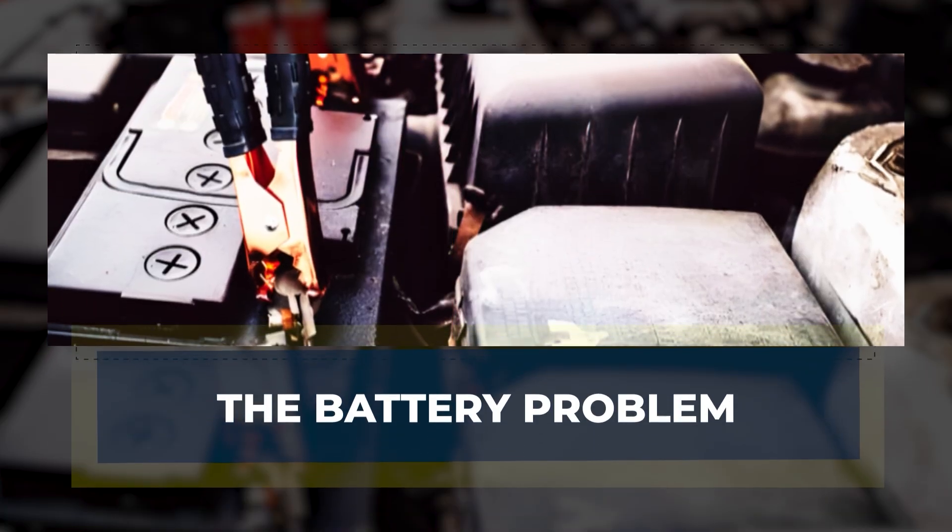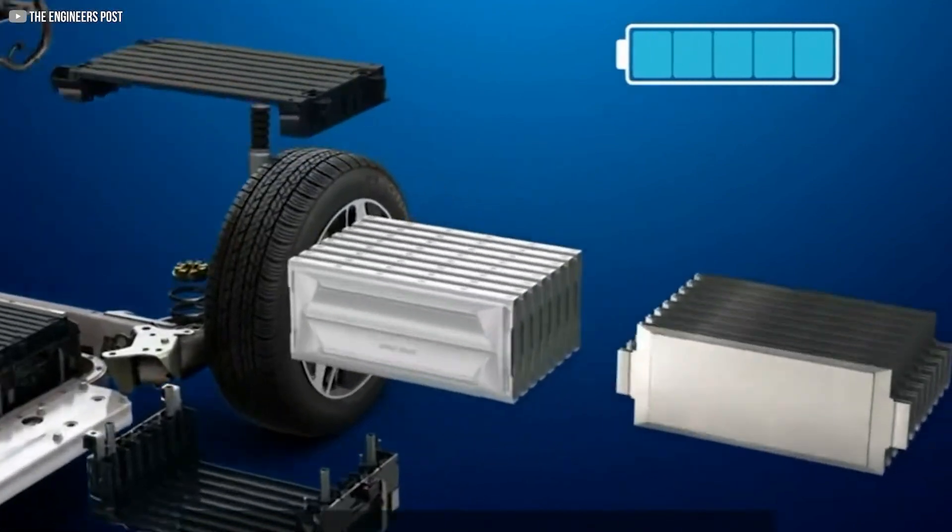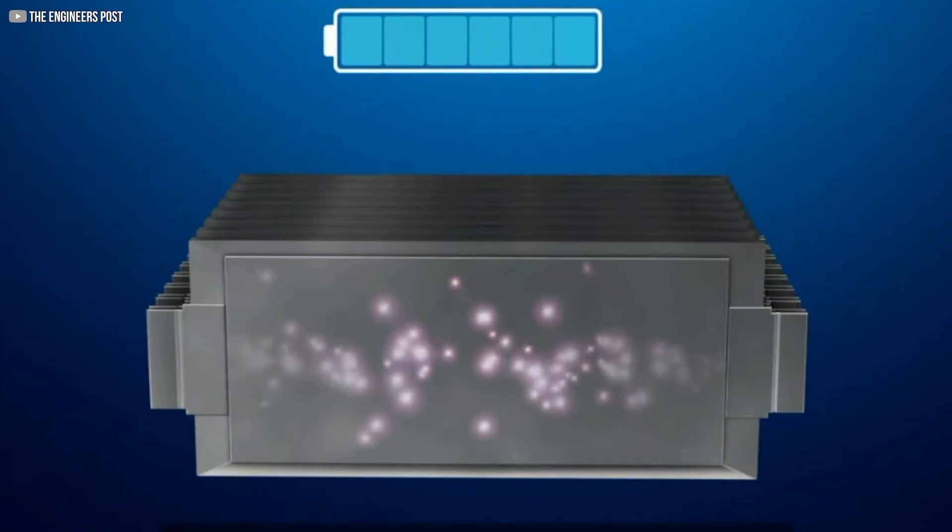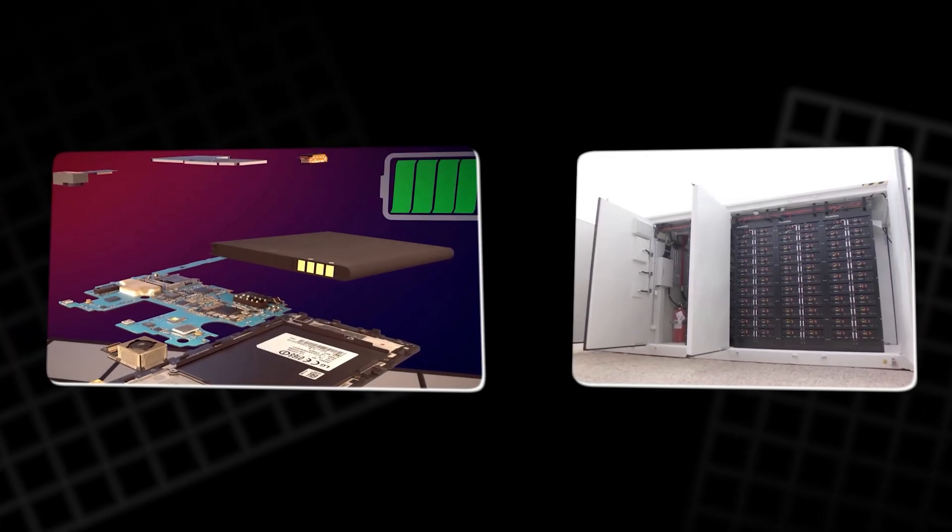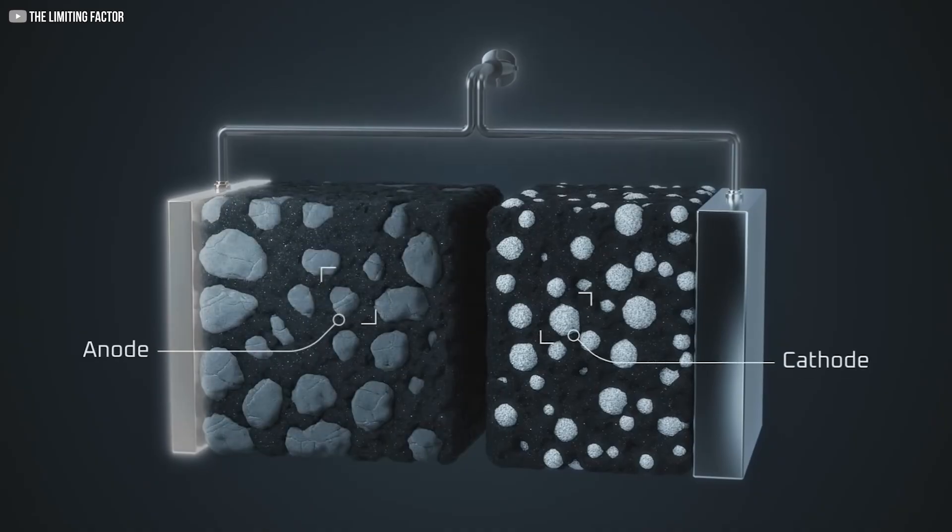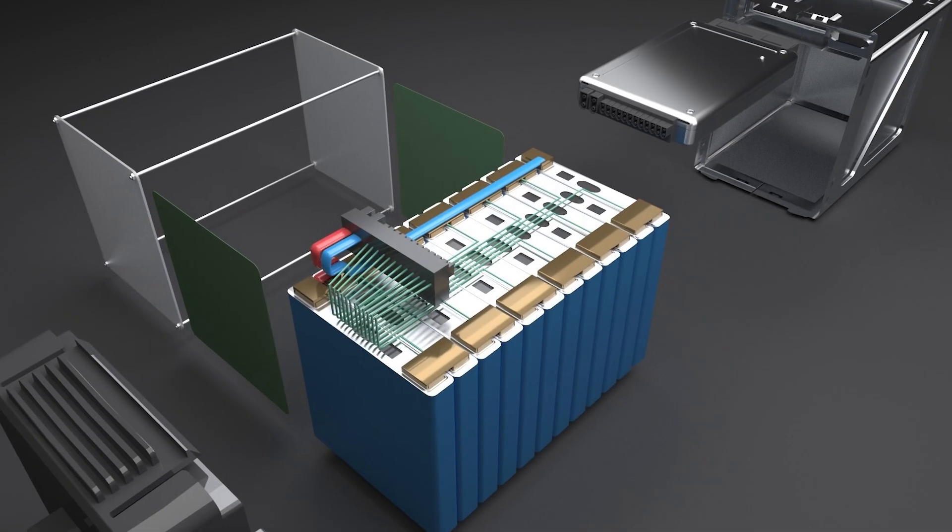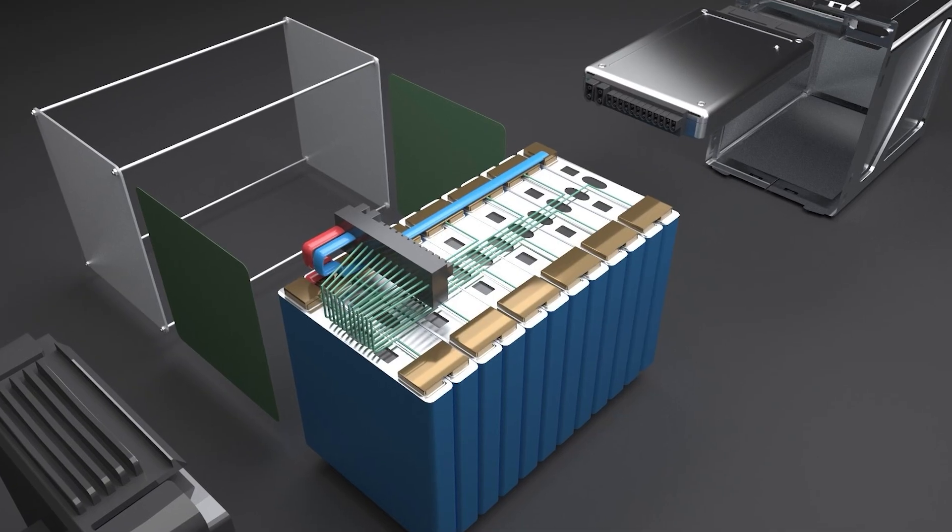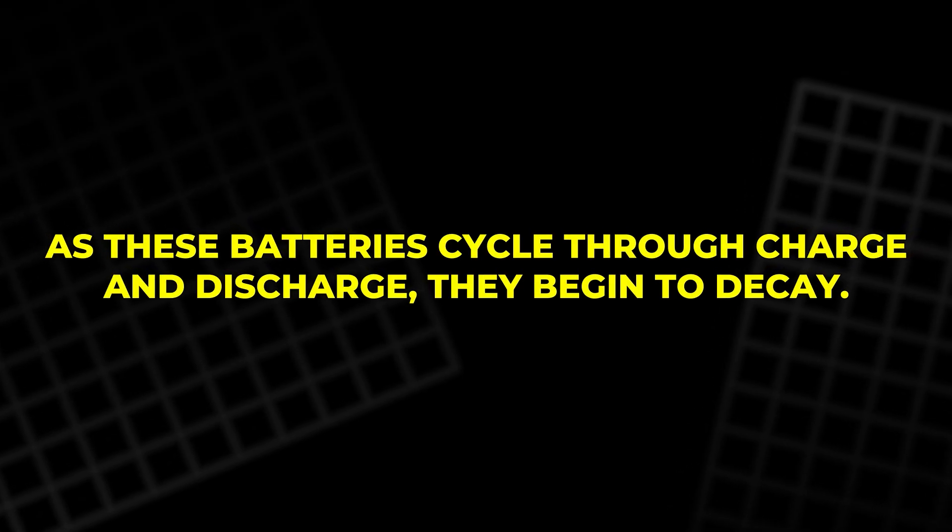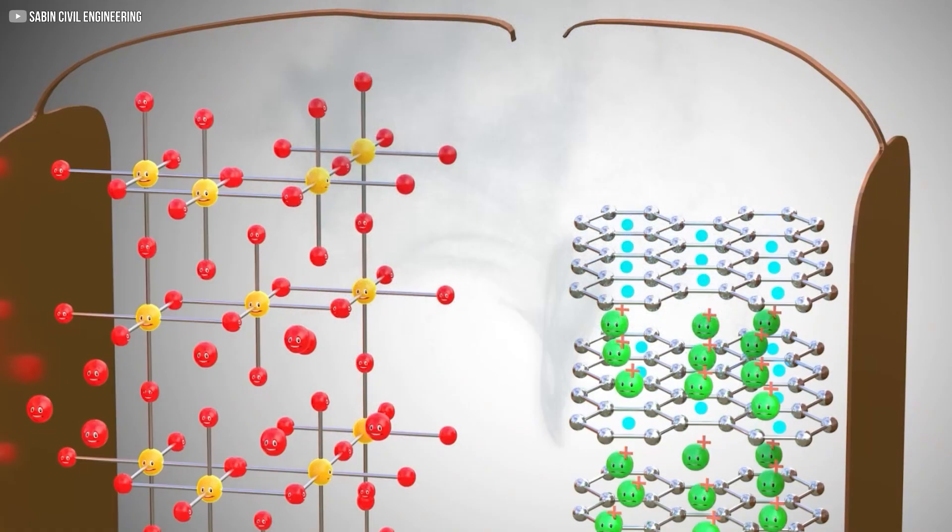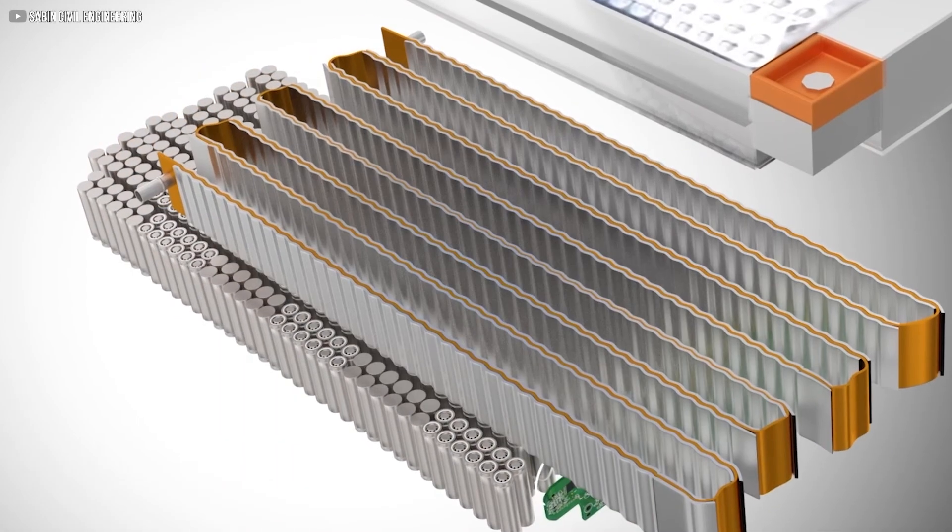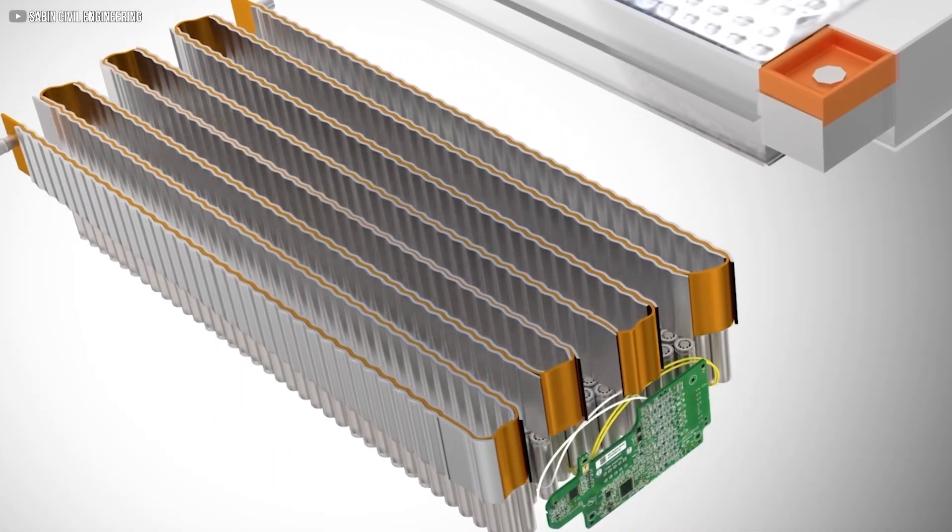The battery problem. For years, lithium-ion batteries have been the gold standard in energy storage. From your phone to massive grid-scale installations, they've quietly powered the shift toward renewables. But there's a catch. Over time, as these batteries cycle through charge and discharge, they begin to decay. Their efficiency drops, their lifespan shortens, and replacing them isn't cheap, either in money or materials.